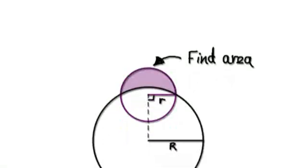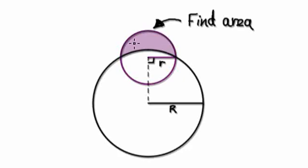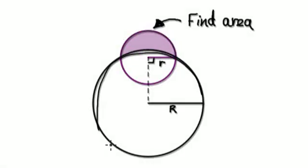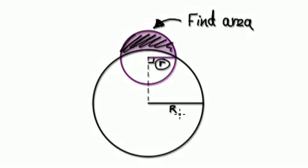Come up with a formula for this purple area. Work out the formula for this purple area. All that you're given is that the radius of the small circle is small r, and the radius of the big circle is capital R. And this here is a right angle. Come up with a formula for this purple area in terms of small r and big r only.